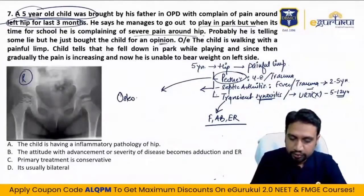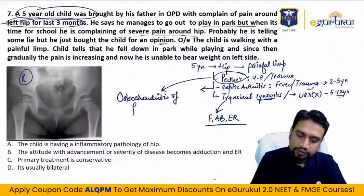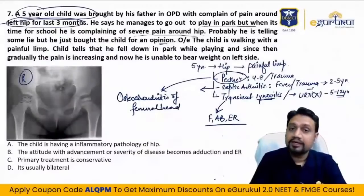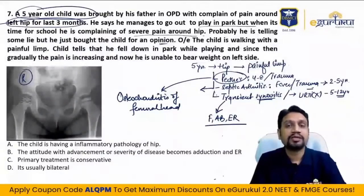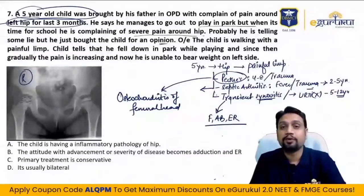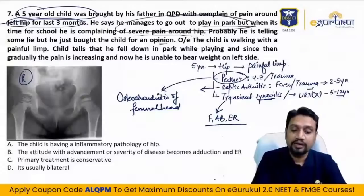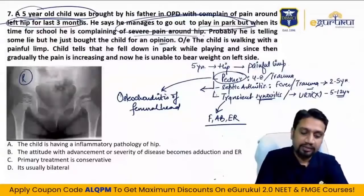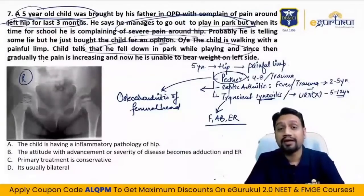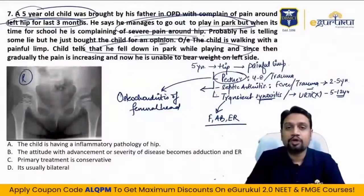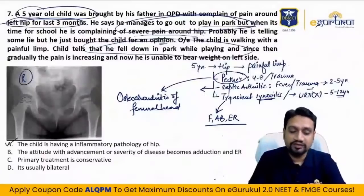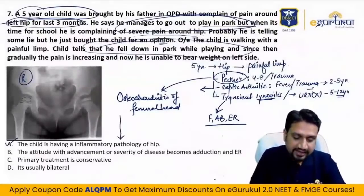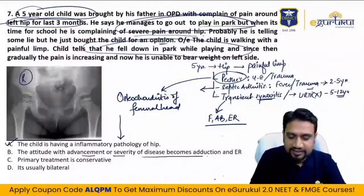Perthes is osteochondritis of the femoral head — usually unilateral, age 5 to 8, after history of trauma, gradually painful. After synovitis, it progresses to necrosis. The child is still walking on the inflamed head, causing damage. The inflammatory process started because of a fall in the park a month or so ago. Perthes: an inflammatory pathology of the hip, also called osteochondritis.